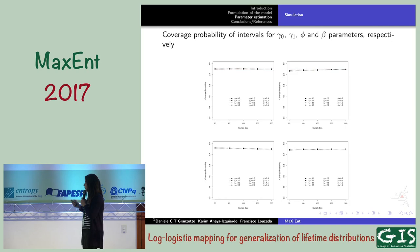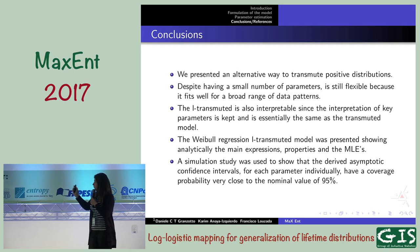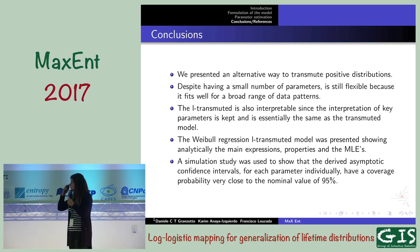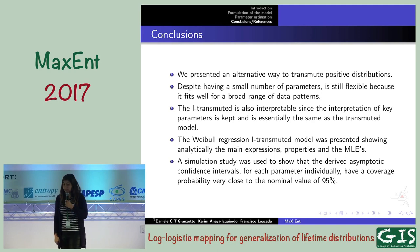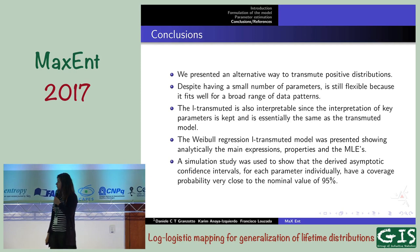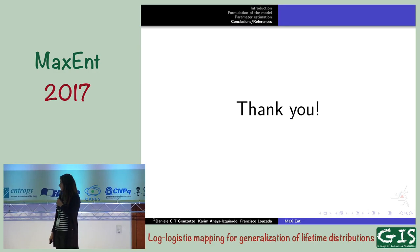In conclusion, we presented an alternative way to transmute positive distributions. Despite having a small number of parameters, the model is still flexible. The L-transmuted model is also interpretable, as the key parameter interpretations are kept the same as in the transmuted model proposed by Shaw and Buckley. The Weibull regression L-transmuted model was presented as an example showing analytic expressions. A simulation study showed that the asymptotic confidence intervals have coverage probability very close to 95%. The main references are the Marshall-Olkin book and the Shaw-Buckley paper. Thank you.